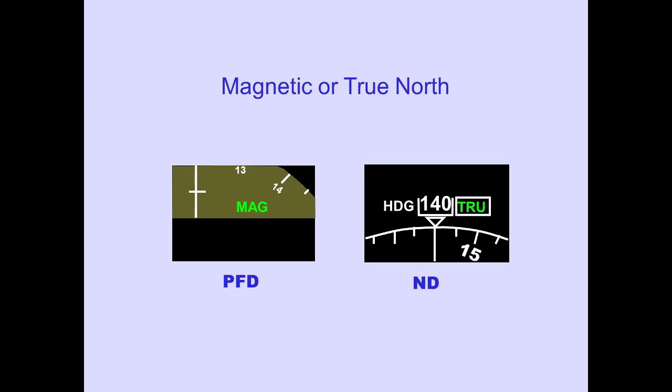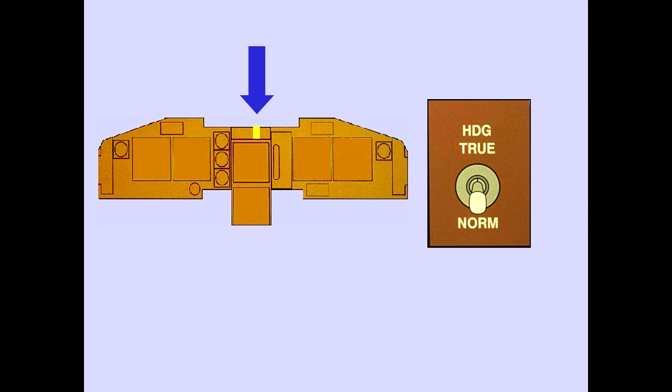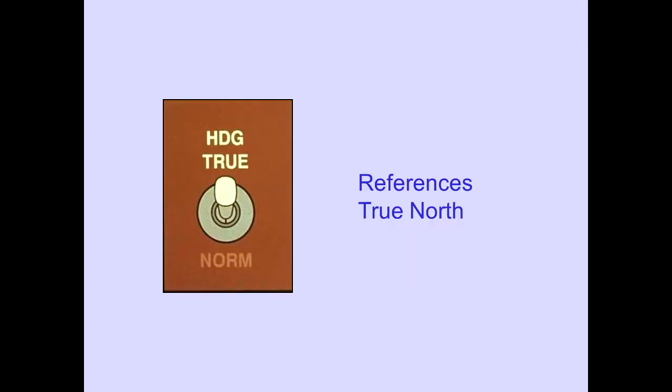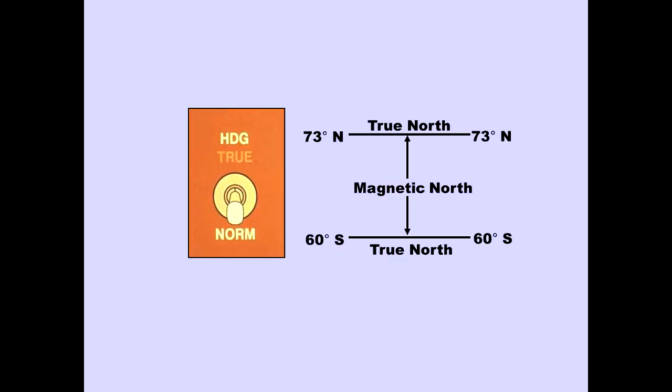Let's discuss heading reference selection. Heading and track are referenced to magnetic or true north, and the reference is displayed on the PFD and ND. The heading reference switch is located on the center instrument panel and supplies information to the PFDs, NDs, Autopilot Flight Director System, and the Flight Management Computers. The true position selects true north as the reference. The normal position selects magnetic north as the reference between 60 degrees south latitude and 73 degrees north latitude.